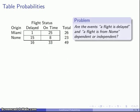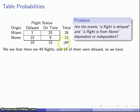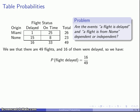Let's consider the following problem: are the events 'a flight is delayed' and 'a flight is from Nome' dependent or independent? The only way we can answer this is to look at the conditional probabilities. We want to determine the probability a flight is delayed and compare that to the probability a flight is delayed given we know the flight is from Nome. There are 49 flights total, and 16 of those are delayed, so the probability a flight is delayed is 16 out of 49.